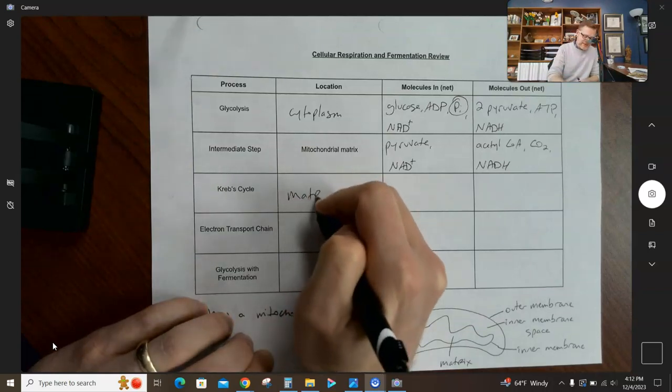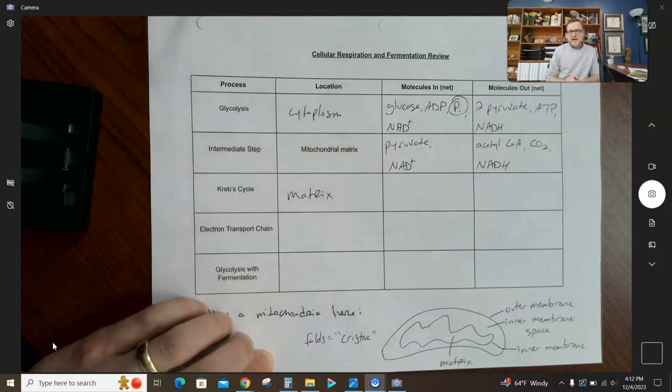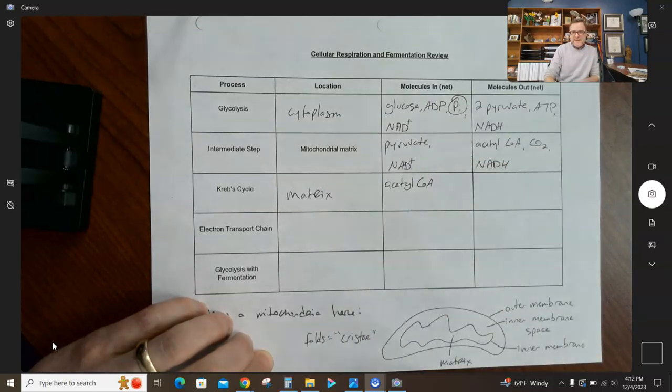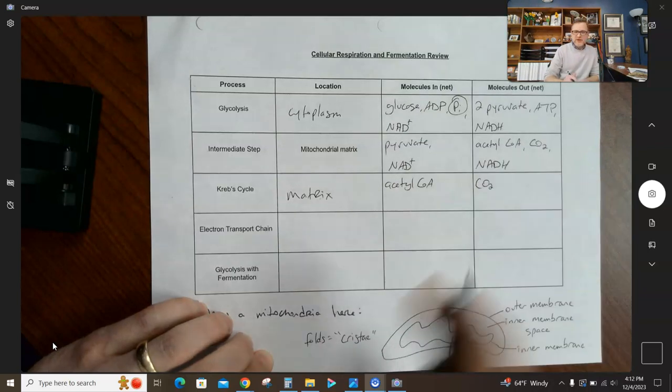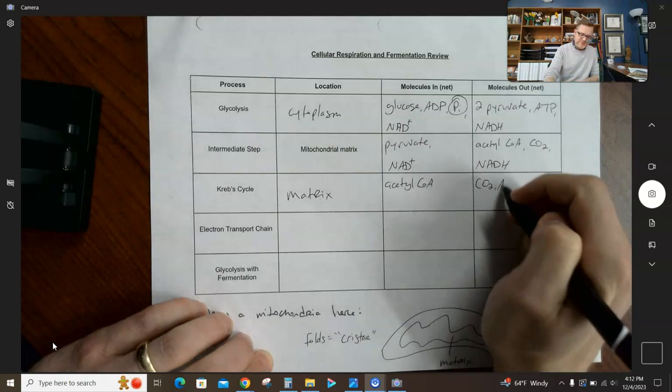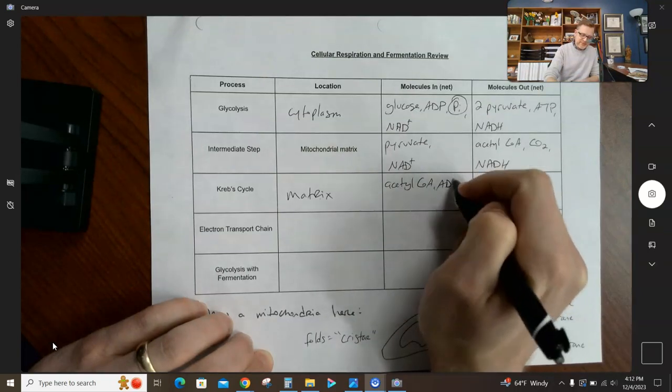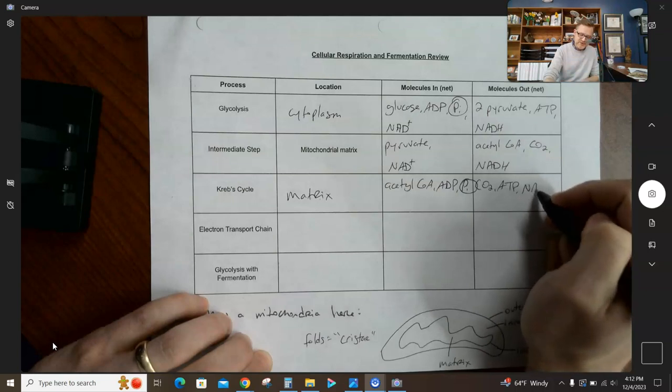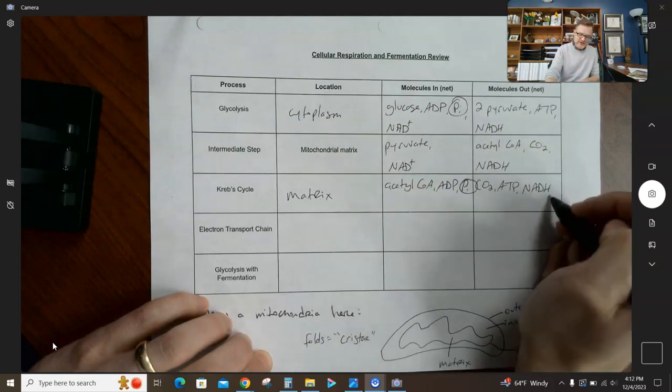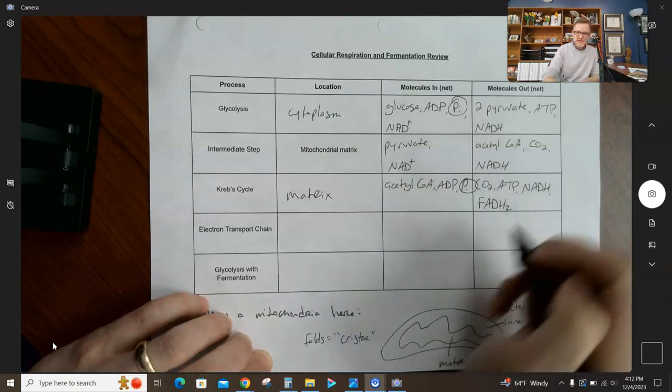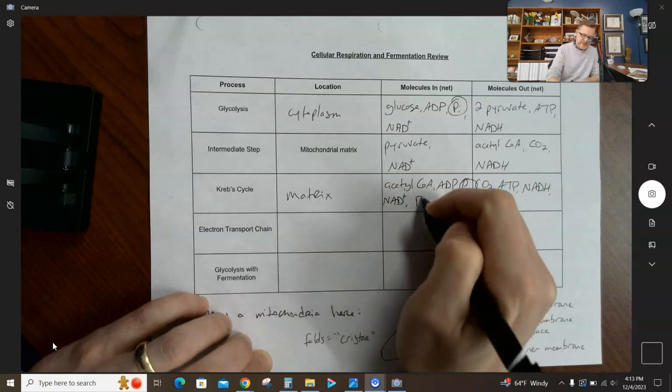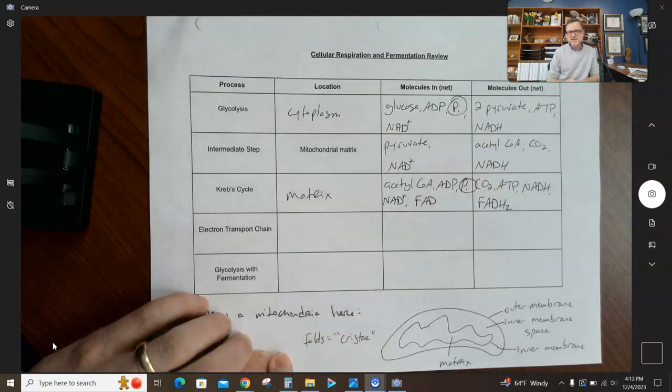The Krebs cycle happens inside the mitochondrial matrix. Again, this is just a review video, we're not going to go through all the steps. Going into the Krebs cycle are your acetyl-CoAs, and the carbons of acetyl-CoA are going to come out as carbon dioxide. The Krebs cycle does produce some ATP, which means you need ADP plus your inorganic phosphate, and the Krebs cycle produces some more NADH and its cousin FADH2, which is another electron shuttle. If you make those, it means you need the oxidized form NAD plus and the oxidized form of FADH2, which is just FAD.